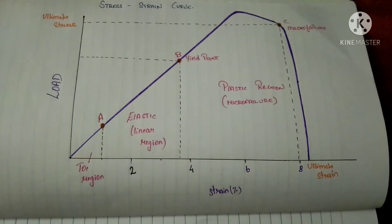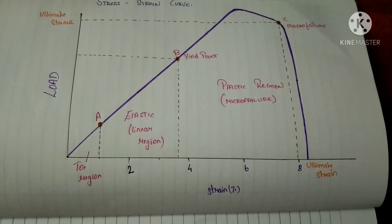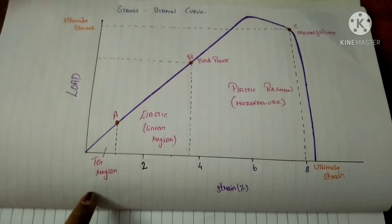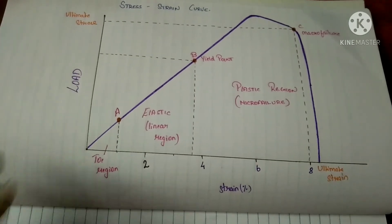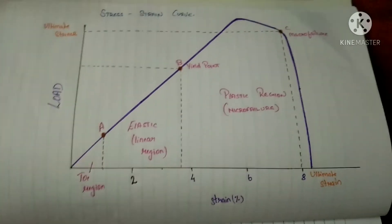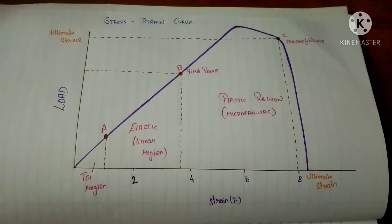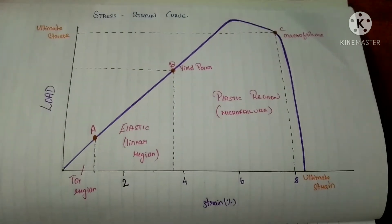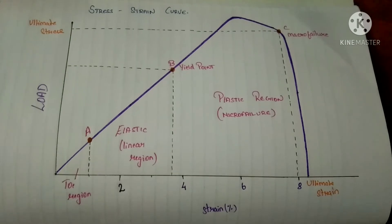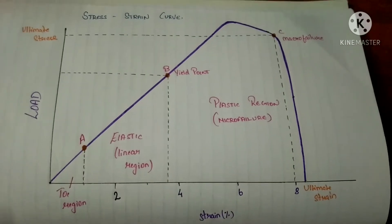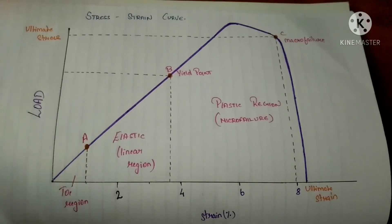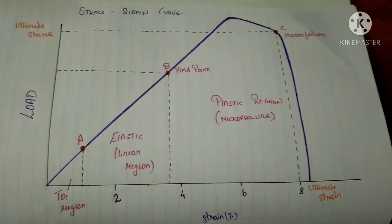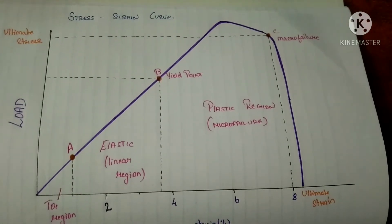This is the diagram of the stress-strain curve. The first region is the toe region. In the toe region, a small amount of force is applied, the stress is relatively very low, and the strain developed is only 1 to 2 percent.